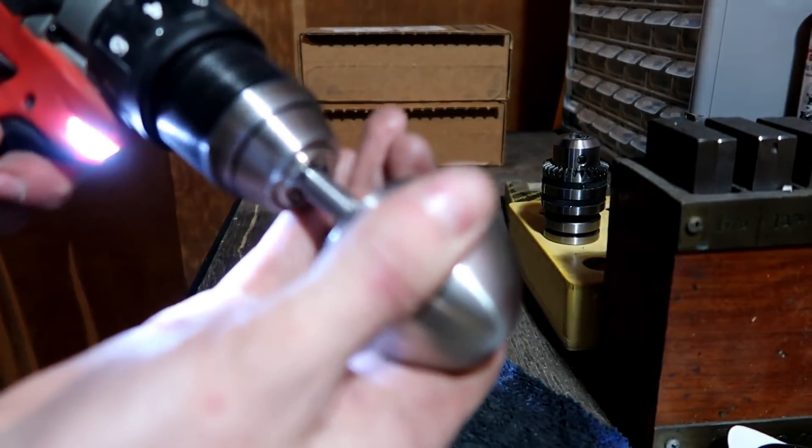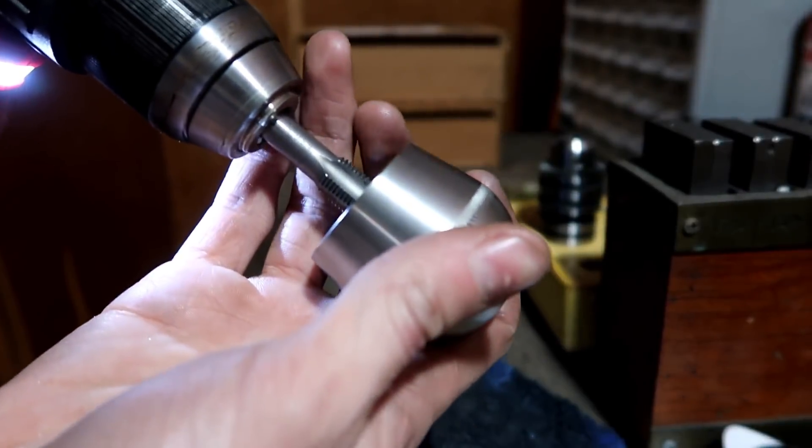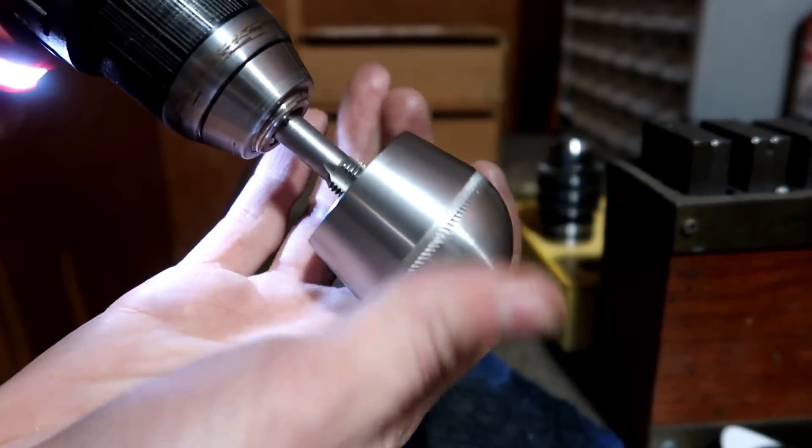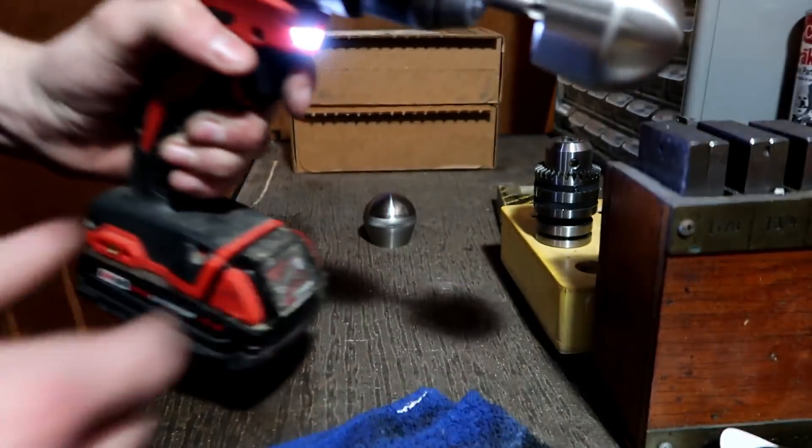Also, to polish stuff like this, I use the drill and I put the tap back in the drill, and then I run it back into the threads, and then I can turn it and polish it. Works great—it would work even better if I had a lathe.